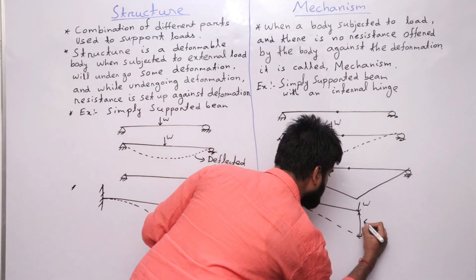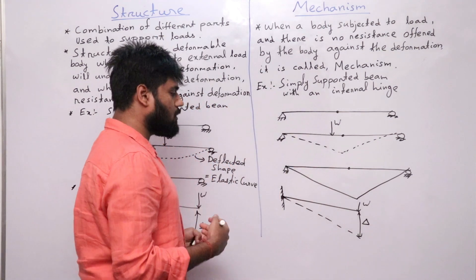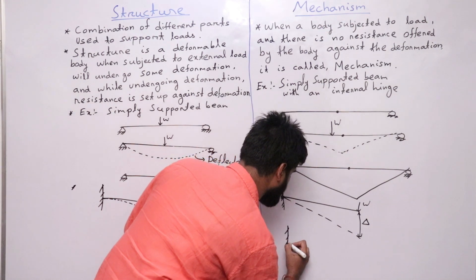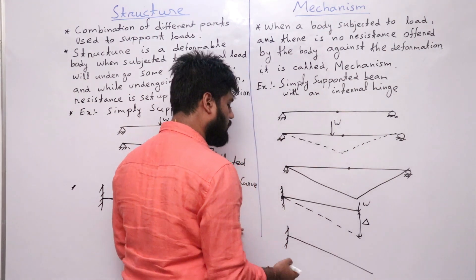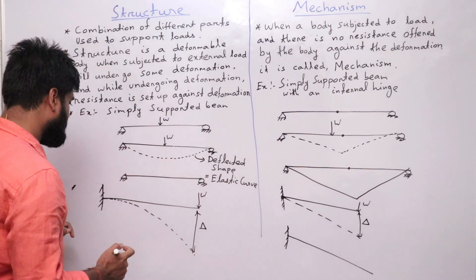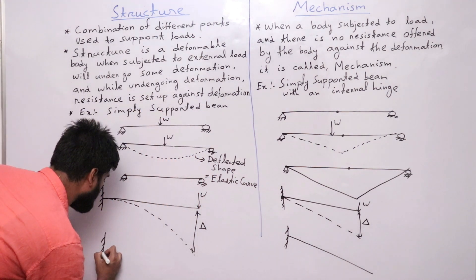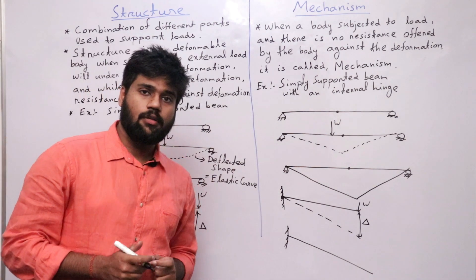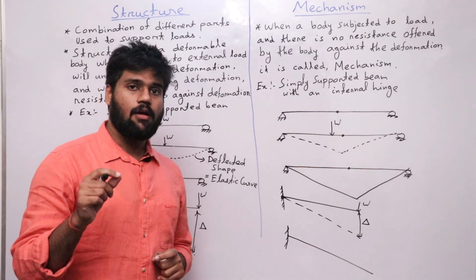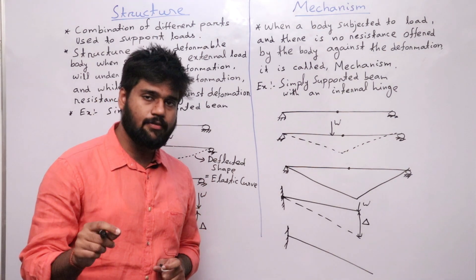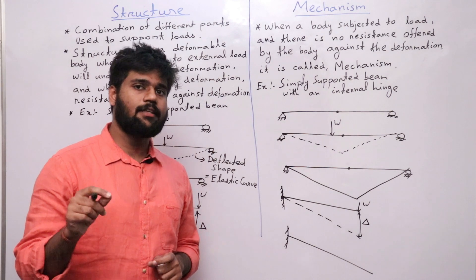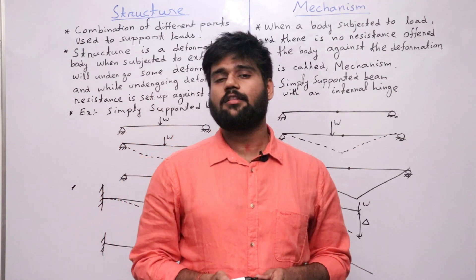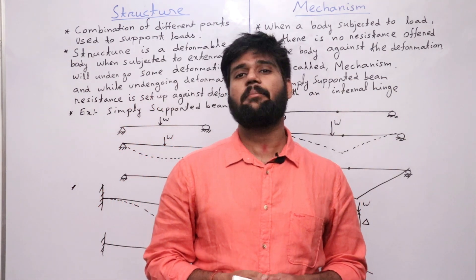But if I take a cantilever with a hinge and apply a load W at its free end, the deflected shape will be a straight line and the deflection will be delta. After the removal of the load the body will not come back to its original position. The most famous interview question: the deflected shape of a structure is an elastic curve, and the deflected shape of a mechanism is a straight line. I hope you have understood the difference between a structure and a mechanism.